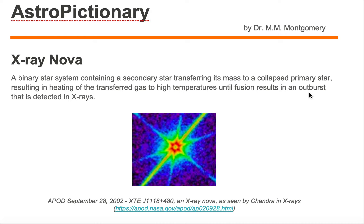This system is XTE J118 plus 480, and this image, as taken by the Chandra Space Telescope, is in the X-ray band. It was posted on Astronomy Picture of the Day, September 28, 2002. This is a close binary system where you have two stars, one of them a secondary which is transferring mass to the primary, and the primary is a collapsed primary star.